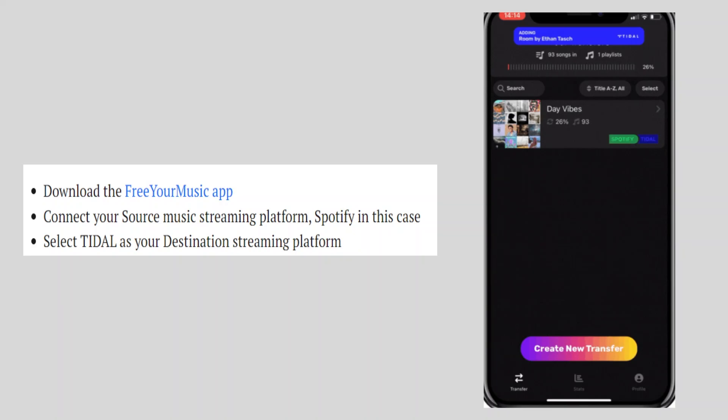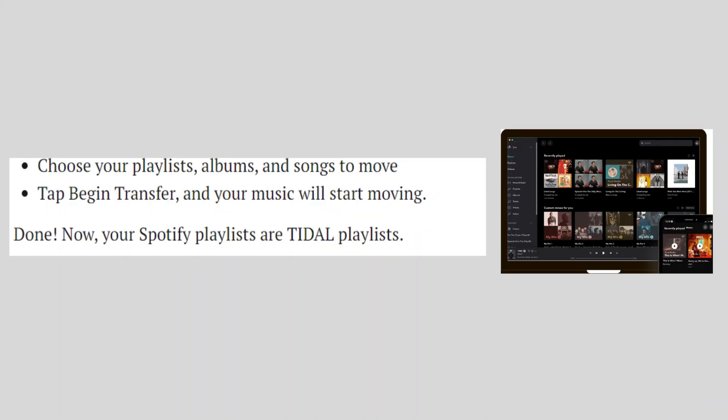First, download the Free Your Music app. Then connect your source music streaming platform — Spotify in this case. Next, select Tidal as your destination streaming platform. Now choose your Playlists, Albums, and Songs to move. Tap begin transfer and your music will start moving.